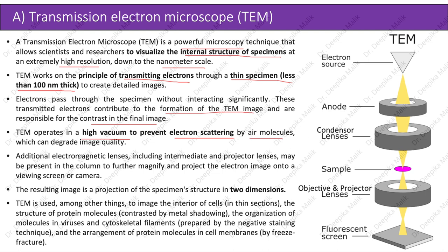Additional electromagnetic lenses including intermediate and projector lenses, as you can see in the diagram, may be present in the column to further magnify and project the electron image onto a viewing screen or camera. The resulting image is a projection of specimen structure in two dimensions. TEM is used to image the interior of cells in thin sections, the structure of protein molecules contrasted by metal shadowing, the organization of molecules in viruses, cytoskeletal filaments prepared by the negative staining technique, and the arrangement of protein molecules in cell membranes by freeze fracture.